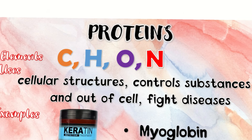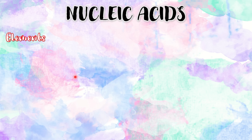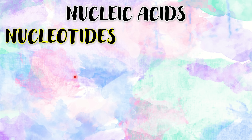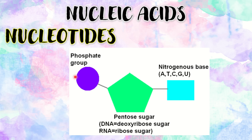Now let us proceed to the last type of organic compound, and that is nucleic acids. The elements found in nucleic acids are carbon, hydrogen, oxygen, nitrogen — just like protein — and phosphorus. Phosphorus comes in because the building blocks of nucleic acids are called nucleotides. Nucleotides are composed of a phosphate group attached to a sugar, which varies depending on the type of nucleic acid, and a nitrogenous or nitrogen base — there are five different bases that can be used.